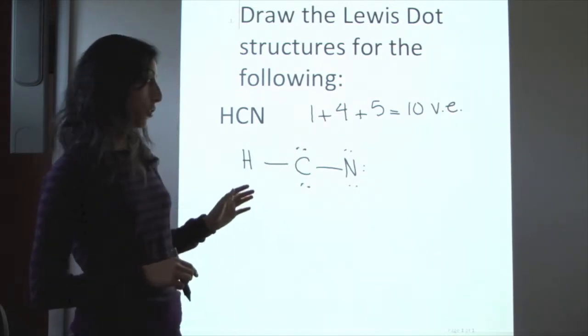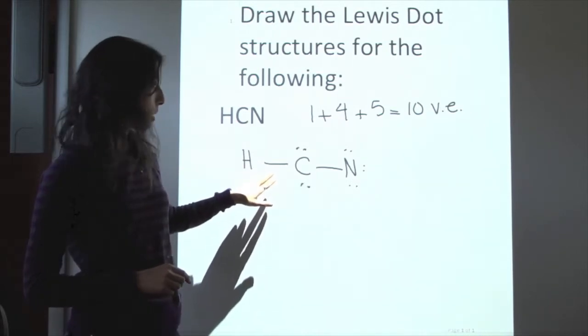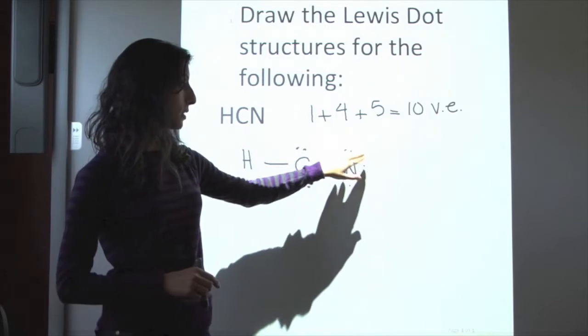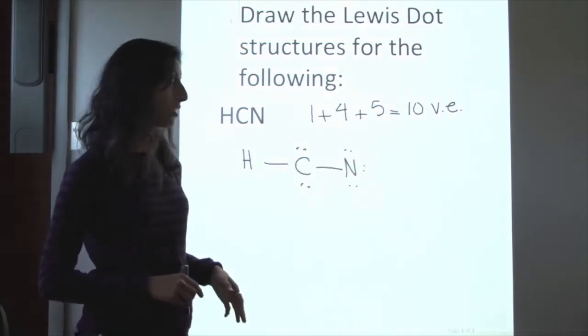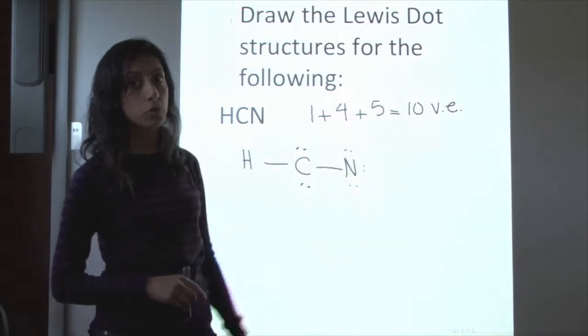The next step is to go ahead and count the number of electrons that we have in our structure. We have two from this bond, four, six, eight. Eight plus six, that's fourteen. That's actually four electrons more than we are supposed to be having.